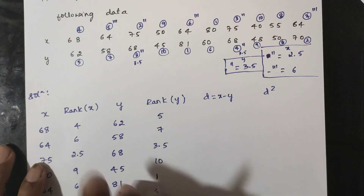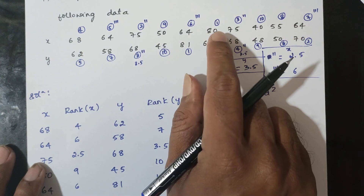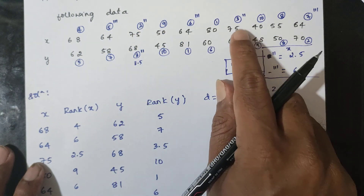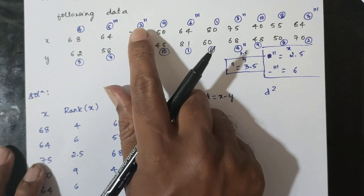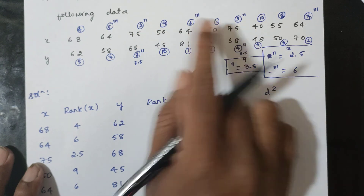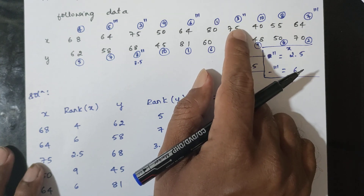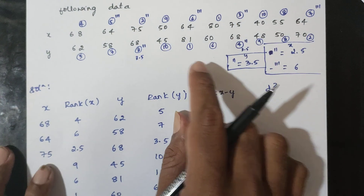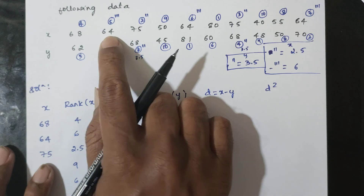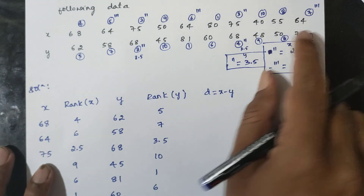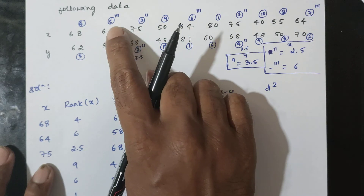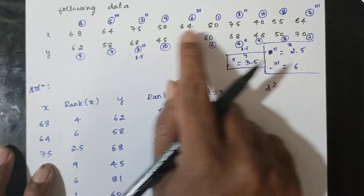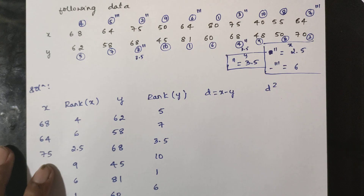This is the procedure for handling tied ranks. The maximum value is ranked first. For double data (two tied values), the average of their rank positions is taken: for example, 2 plus 3 by 2. For triple data (three tied values), the average of ranks 5, 6, and 7 is taken: 5 plus 6 plus 7 by 3, which equals 6.